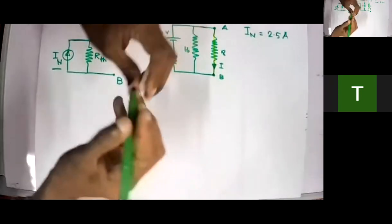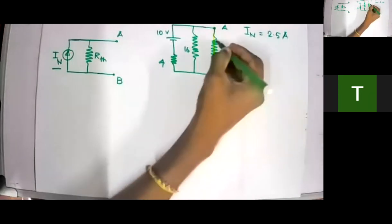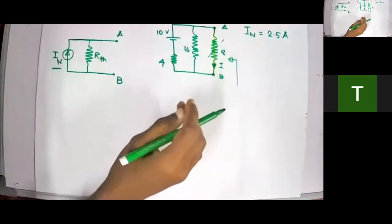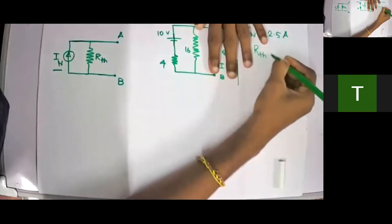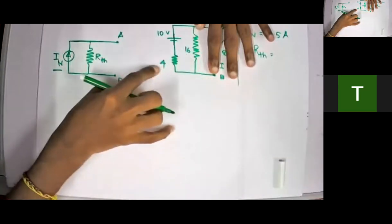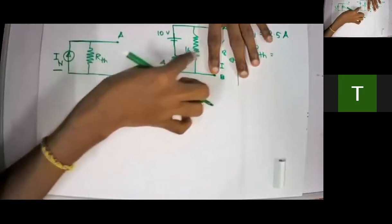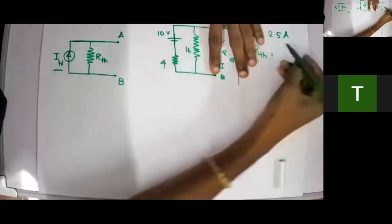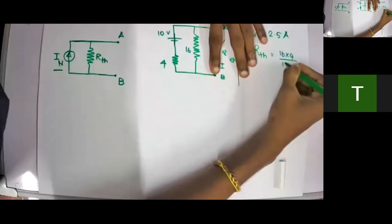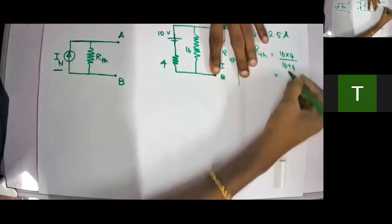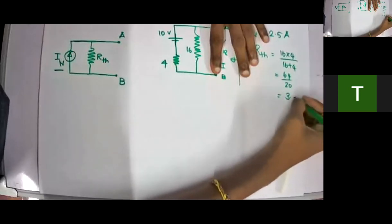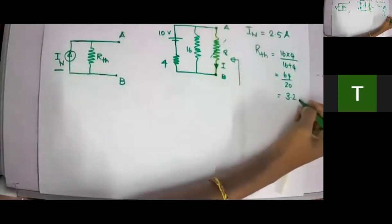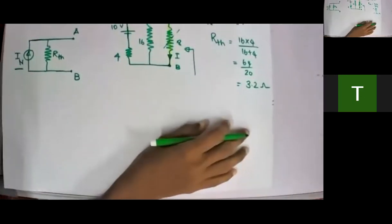RTH is calculated similarly to Thevenin's theorem: open-circuit the 8-ohm resistor and short-circuit the battery. Looking from A and B, you have 16 parallel 4. So RTH = (16 × 4) / (16 + 4) = 64 / 20 = 3.2 ohms.